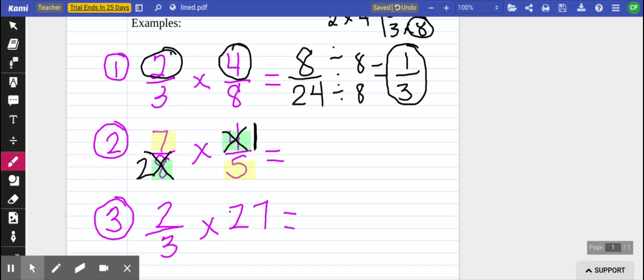Now I follow step 2. Multiply my numerators. 7 and my new numerator of 1 makes my numerator 7. And then I have 2 times 5 is 10. This cannot be simplified because 7 is a prime number.